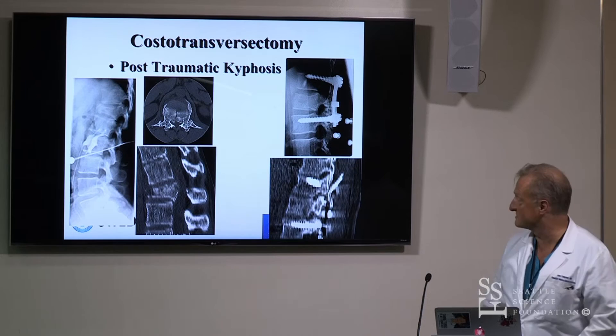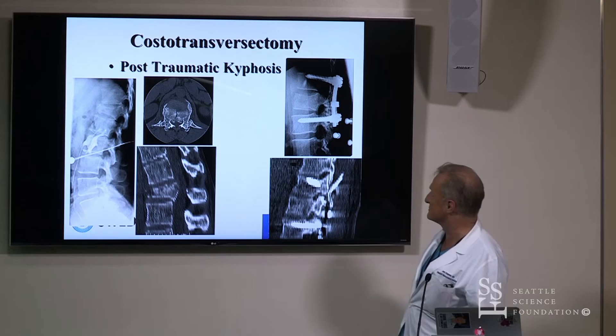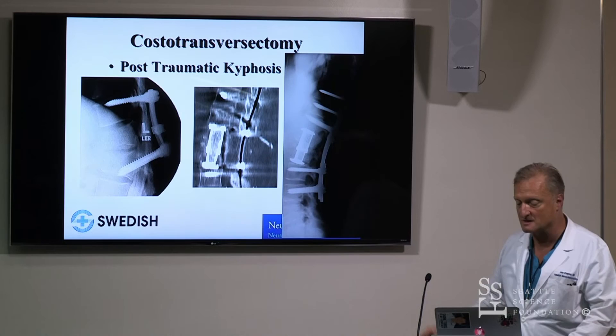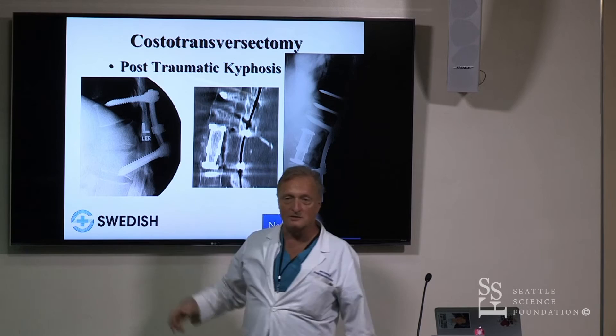Failures of short-segment fixation are feared. This is a classic case of a burst fracture nicely treated with posterior screws only, but it collapsed. We could have avoided this by putting short screws into the patient or doing a secondary anterior corpectomy. Short-segment fixation alone can work, but you either need to put the patient in a cast, add an anterior graft, or use short-segment screws at the fracture level to decrease the cantilever effect.